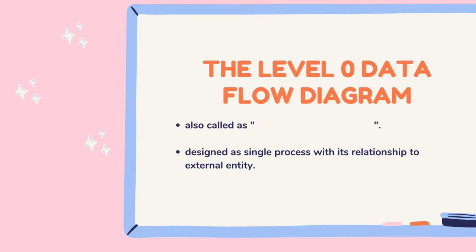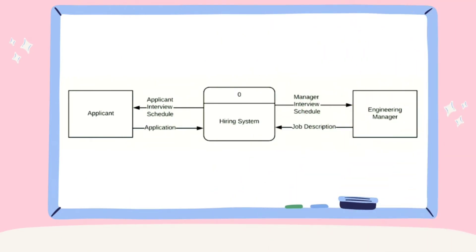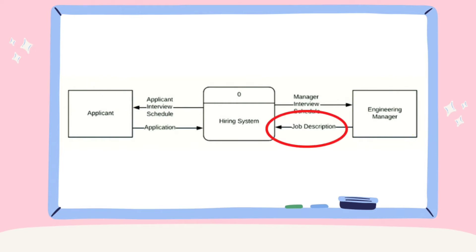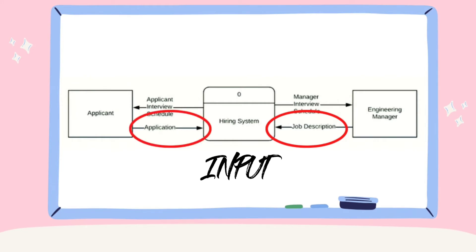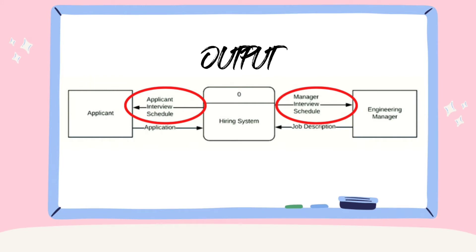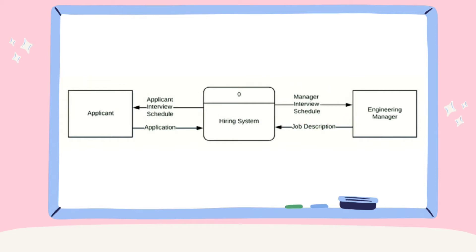Let me show you an example. We have here one process node named hiring system, and two external entities: the applicant and the engineering manager. These arrows here represent the input from its external entities to the process node, while these arrows here represent the output from the process node to its external entities. But this is just a basic or simple level 0 data flow diagram.